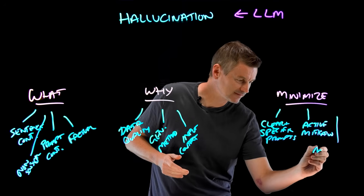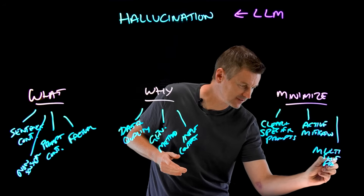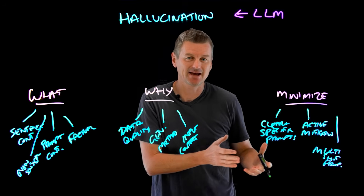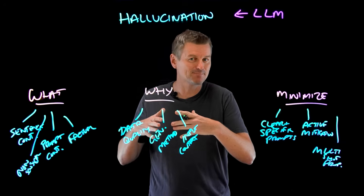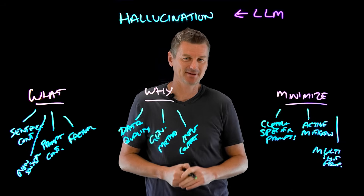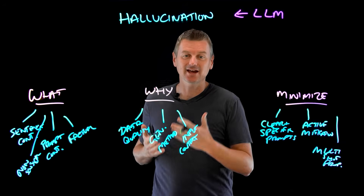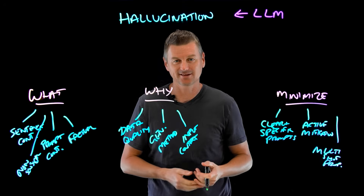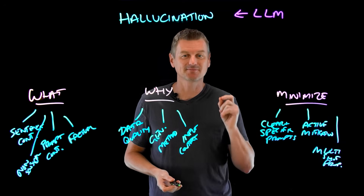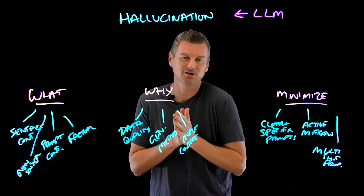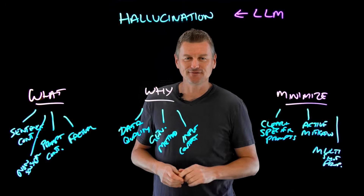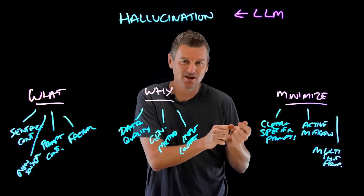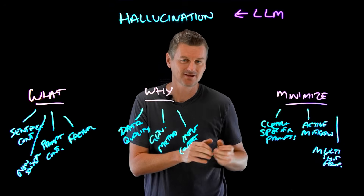And then one more is multi-shot prompting. In contrast to single-shot prompting, where we only give one prompt, multi-shot prompting provides the LLM with multiple examples of the desired output format or context. This essentially primes the model, giving it a clearer understanding of the user's expectations. By presenting the LLM with several examples, we help it recognize the pattern or context more effectively. This can be particularly useful in tasks that require a specific output format — generating code, writing poetry, or answering questions in a specific style. While large language models may sometimes hallucinate and take us on an unexpected journey 54 million kilometers off target, understanding the causes and employing strategies to minimize them allows us to harness the true potential of these models and reduce hallucinations.